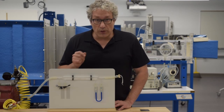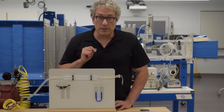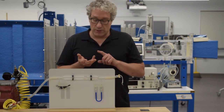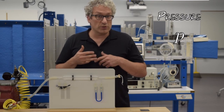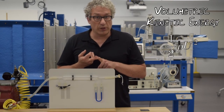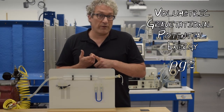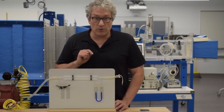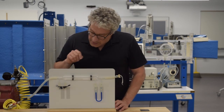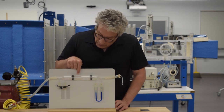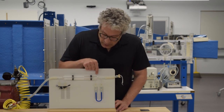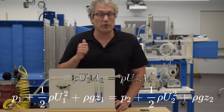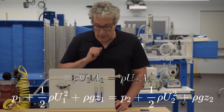We then combine that with a Bernoulli equation analysis. The Bernoulli equation says that as we follow along the streamline, the fluid is trading back and forth between three different forms of energy: pressure, which is stored ability to do work; dynamic pressure, one-half U squared; and gravitational potential energy. Since this flow is horizontal, we don't have to pay attention to the gravitational potential energy term. So as the fluid moves from a large diameter section to a small diameter section, conservation of mass tells us it must accelerate, and the Bernoulli equation says that if it accelerates, the pressure must drop.